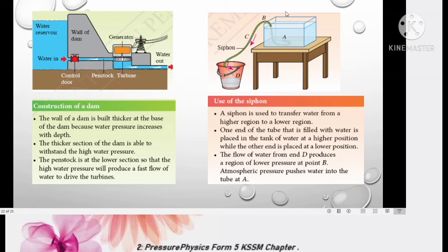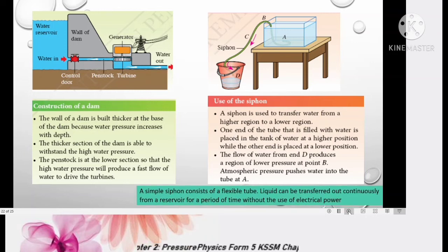You can see A here is at the bottom of the container. So above point A, there is water and at the same time there is atmospheric pressure. The total pressure act at A is very high. The higher pressure at A causes the water to flow into the siphon into this pail and come out at point D. The difference in pressure forces water to flow from one point to another. A simple siphon consists of a flexible tube, meaning can be bent here and there. Liquid can be transferred out continuously from a reservoir for a period of time without the use of electrical power. You don't need motor to pump out the water, this is a manual process. Just a simple activity that you can done by applying the concept of pressure and liquid. You can try this at home. Very, very interesting.